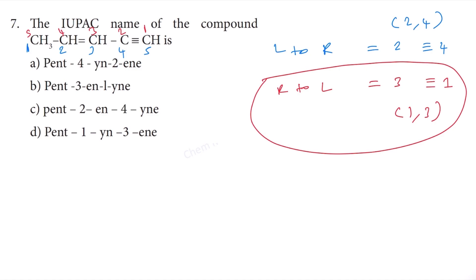That gives low numbers to multiple bonds as a set. Therefore, pent-3-en-1-yne is the correct IUPAC name, which is mentioned in option B. Therefore, option B is correct.